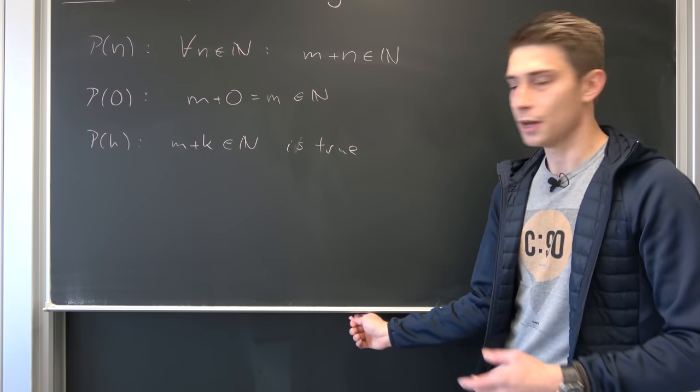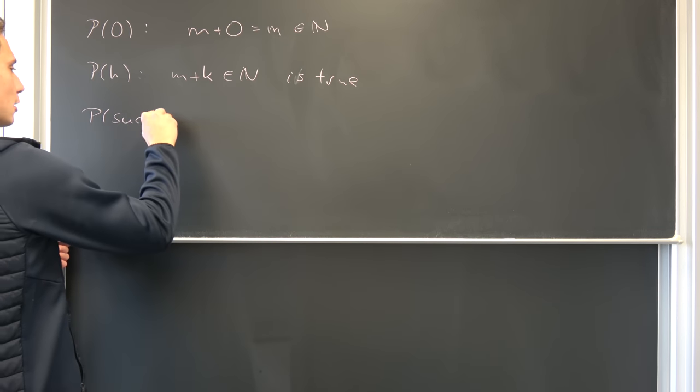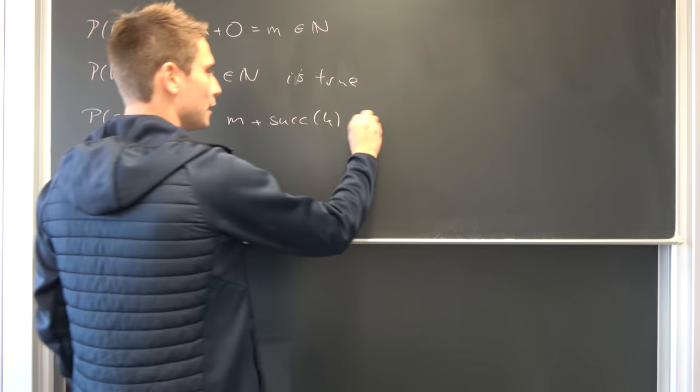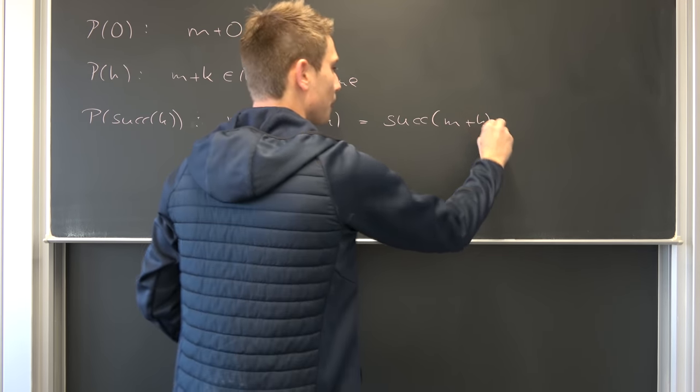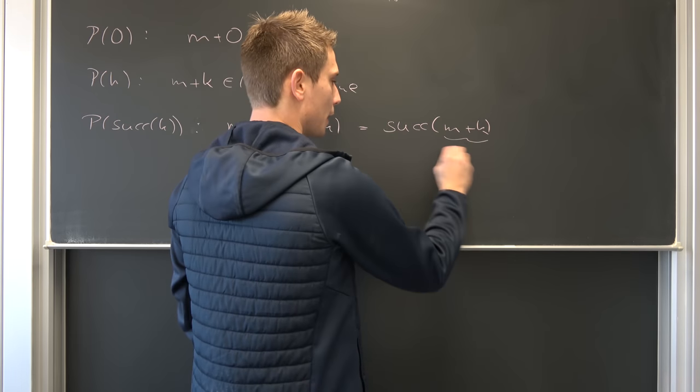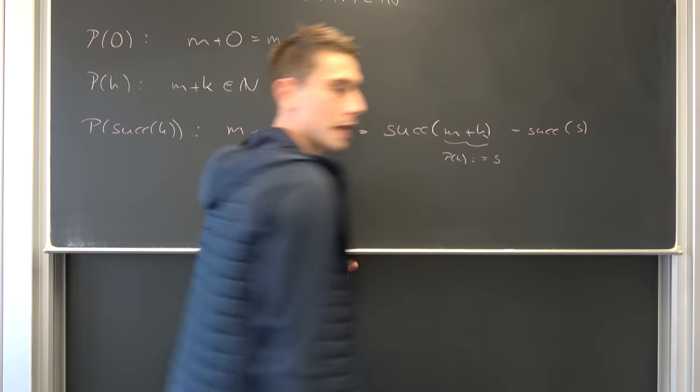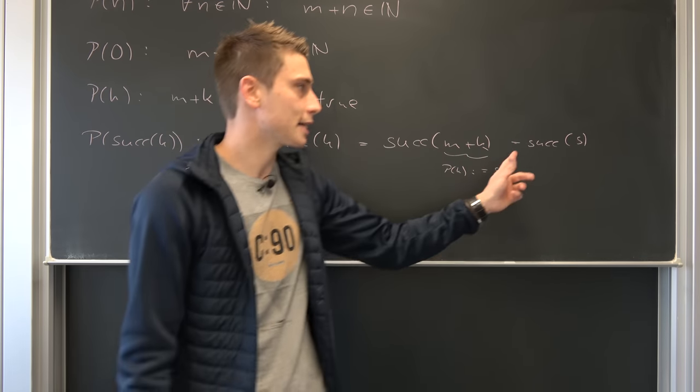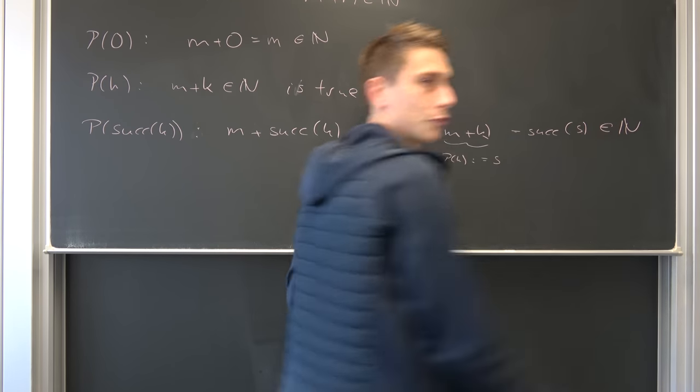So just basic induction we have done this before. And now we want to show that this ensures P(successor of k) to be true. So what happens to P(successor of k)? This is nothing but m plus suc(k). And by the second rule of addition we can drag the successor to the front. So we have the successor of m plus k. And by our induction hypothesis we know that m plus k is exactly element of natural numbers. Why not say that m plus k by our P(k) is nothing but, let's say, s for example. So that means we have the successor of s. And by our second Peano axiom we also know whenever some element s is element of natural numbers, that also means that this thing has a unique successor of s, also element of natural numbers. So by our Peano axioms we also know that this thing is element of natural numbers. And then we are done.